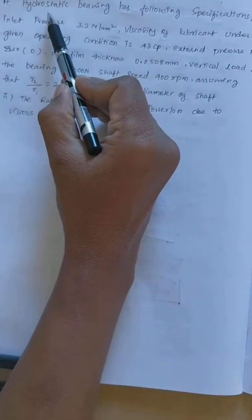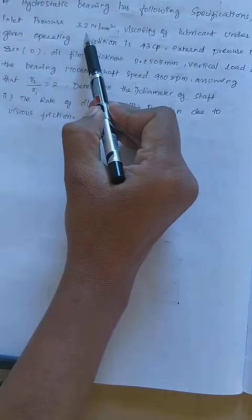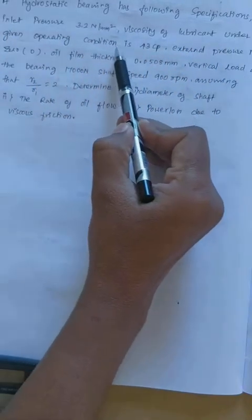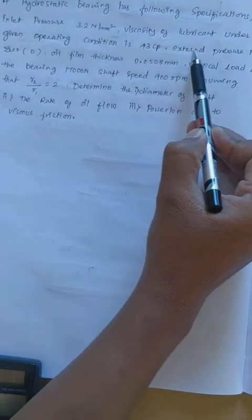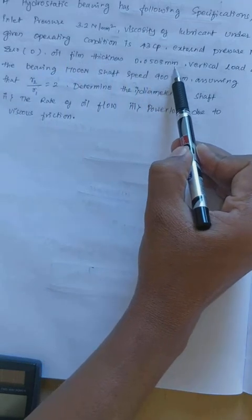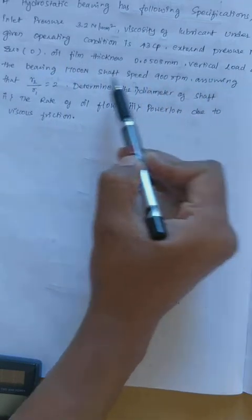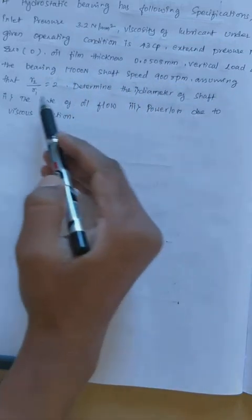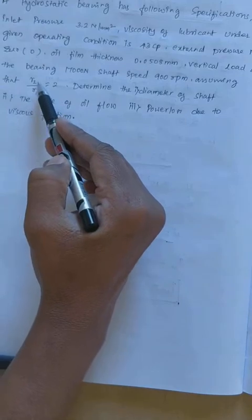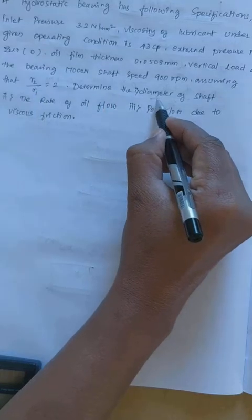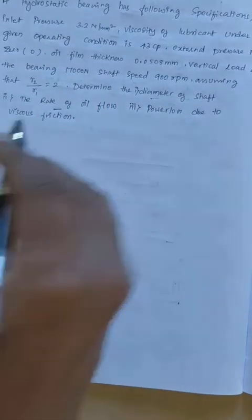The problem is something like this. A hydrostatic bearing has the following specifications: inlet pressure P₀ is 3.2 N/mm², viscosity of the lubricant under given operating conditions is 43 centipoise, external pressure is 0, oil film thickness is 0.0508 mm, vertical load on the bearing is 17,000 N, shaft speed is 900 rpm. Assuming radius ratio R2/R1 = 2, we need to find the diameter of the shaft, rate of oil flow, and power loss due to friction.